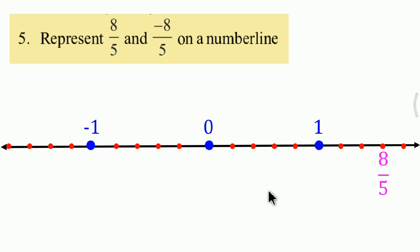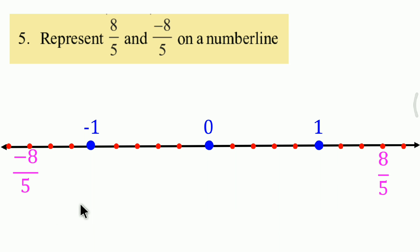Next, for negative 8 upon 5, go to the left side from 0 and count 8 parts: 1, 2, 3, 4, 5, 6, 7, 8. That point is negative 8 upon 5. Simple.